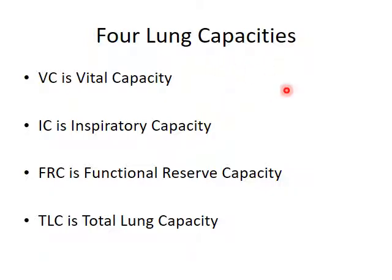Lung capacities are combinations of the four lung volumes that tell us something about the animal's ability to breathe. If you go get your lungs tested, they're going to focus on these capacities — how much can you breathe in, how much can you breathe out — then measure your volumes and add them up to generate these capacities. There's the vital capacity, inspiratory capacity, functional residual capacity, and total lung capacity.